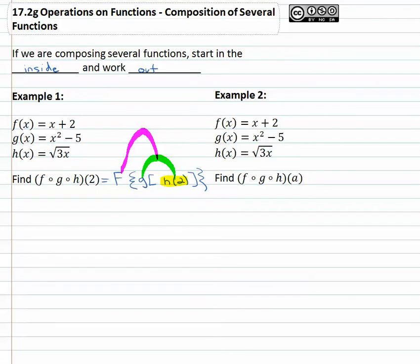So first we need to find, in the very center of things, what is h of 2. Well, that tells us which function to go to and what to replace the variable with. We go to h and replace the variable with 2. So we have the square root of 3 times 2, which is the square root of 6.